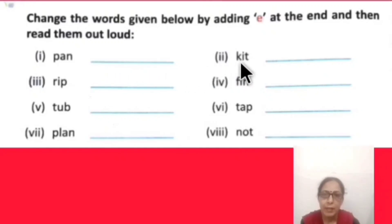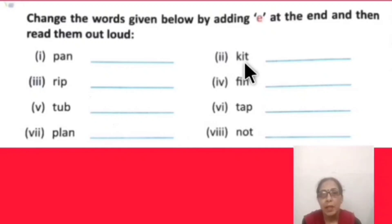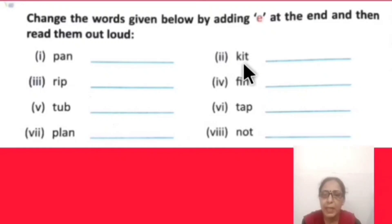Next word: K-I-T, 'kit' — a container to keep things in, like your stationary kit. When E is added at the end, the word becomes K-I-T-E, 'kite' — a kite (patang).